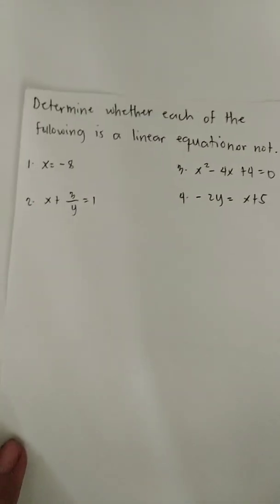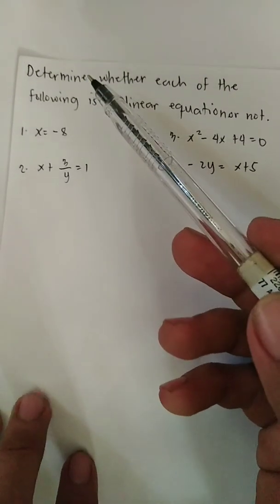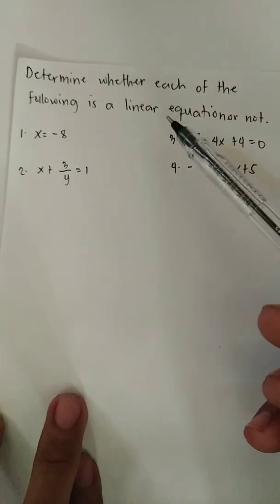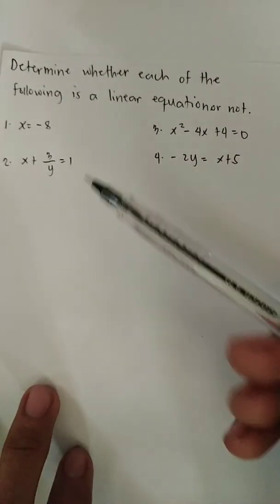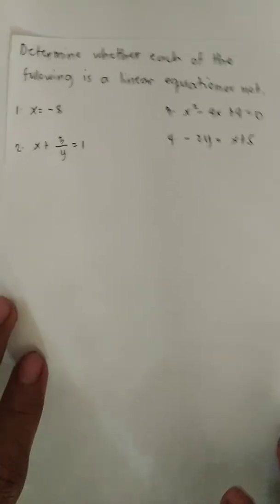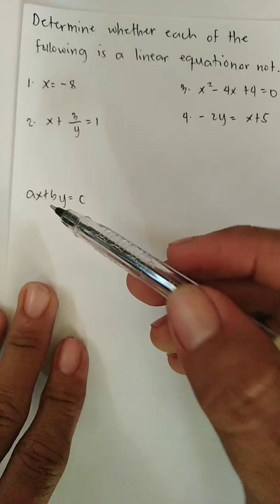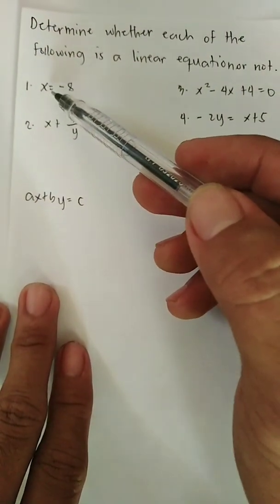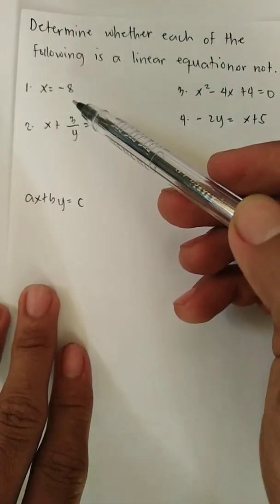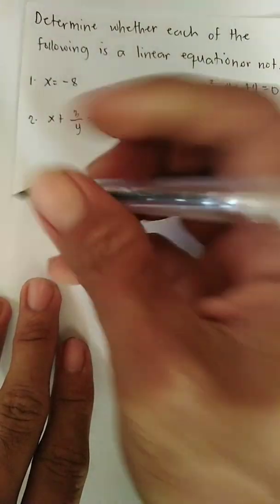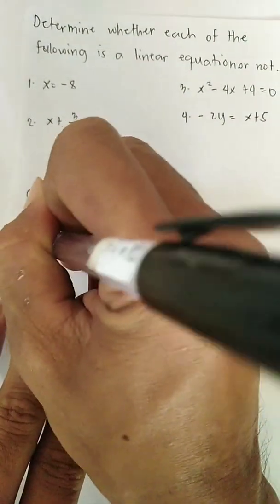So let us have examples on determining whether the equation is linear or not. The instruction is to determine whether each of the following is a linear equation or not. Just follow the format of AX plus BY is equals to C. For number 1, X is equals to negative 8 — we can consider this one as linear.